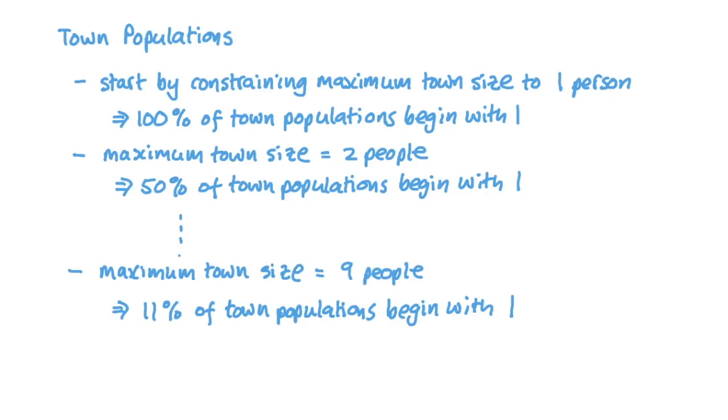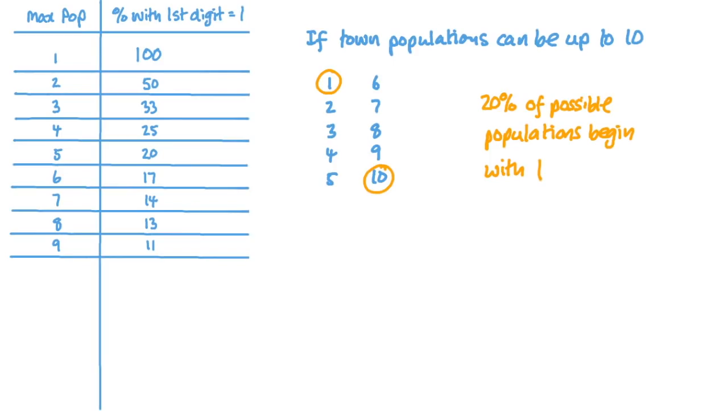Now let's consider towns with populations of up to 10 people. Well, those with one or 10 people have populations with a first digit of one, so now two out of the 10 options have a first digit of one.